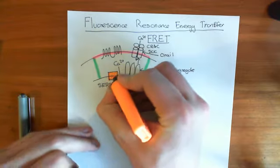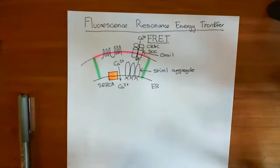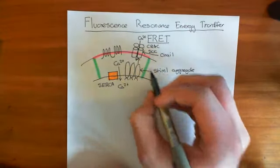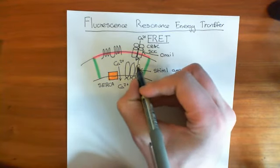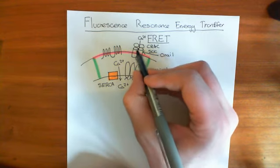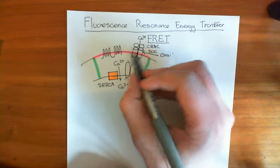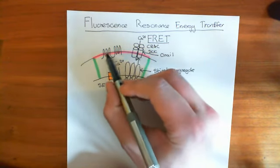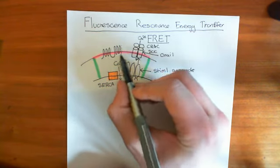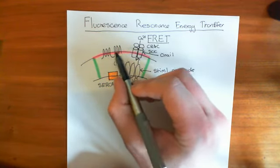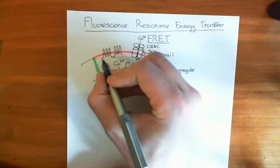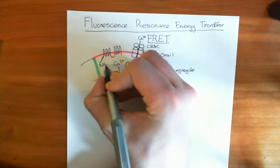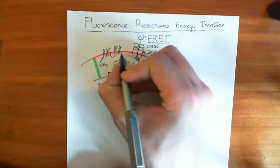We're going to talk about FRET in the context of figuring out these interactions — using FRET to show that the STIM1 protein is very close to the CRAC channel, and that the CRAC channel, the calcium-release-activated calcium channel, is very close to adenylyl cyclase 8. In fact, they are bound to one another. This channel is actually bound to the N-terminus of adenylyl cyclase 8, the amino terminus, whereas the carboxyl terminus is on the other side.